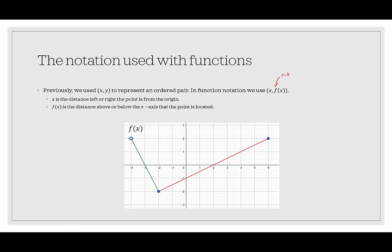So if the name of the function is g, then we would use g of x. If it's r, we would use r of x. Or sometimes when the variable is t, it would be t comma r of t, where x is the distance left or right that the point is from the origin.